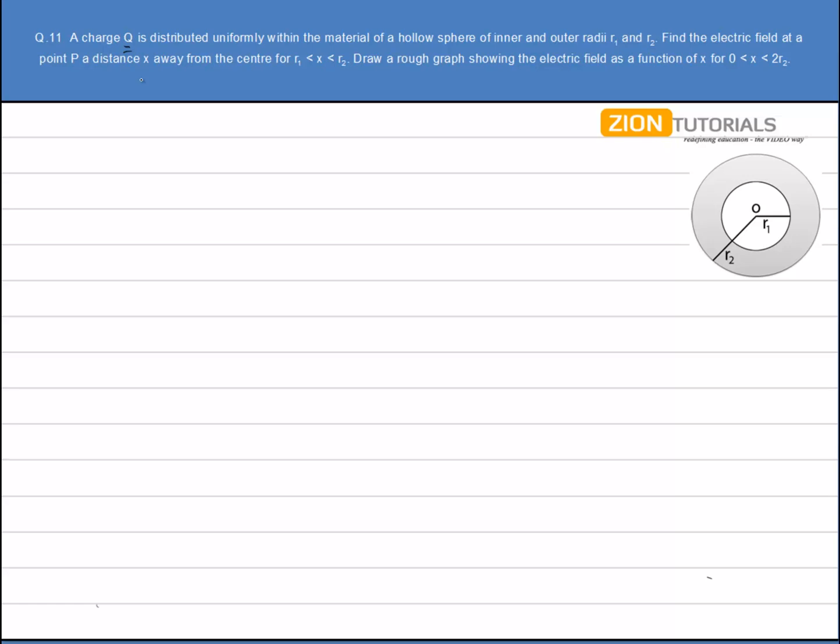A charge Q is distributed uniformly within the material of a hollow sphere of inner and outer radii R1 and R2. Find the electric field at a point P at a distance x away from the center where x varies from R1 to R2. Draw a rough graph showing the electric field as a function of x for x varies from 0 to R2.